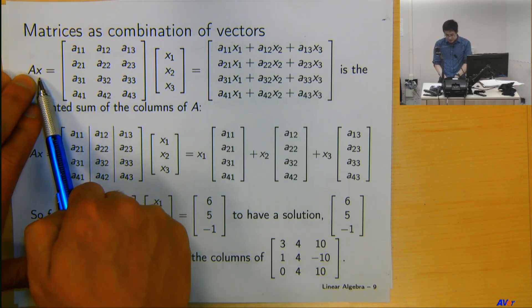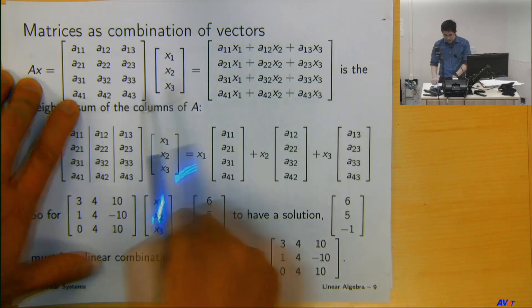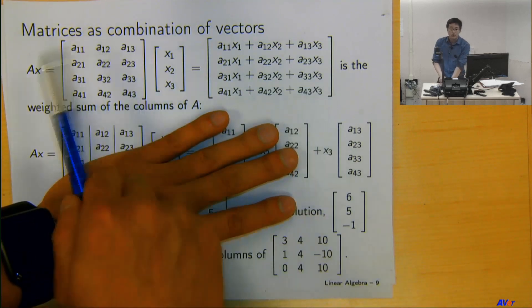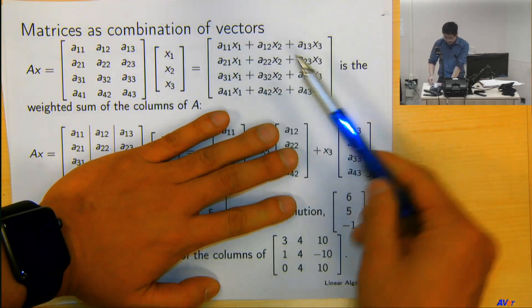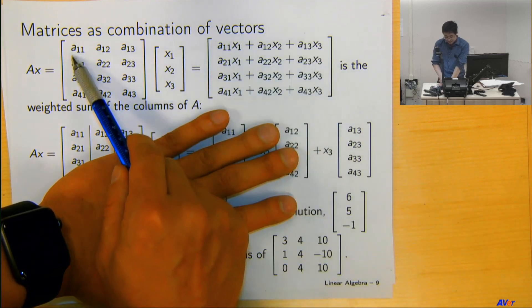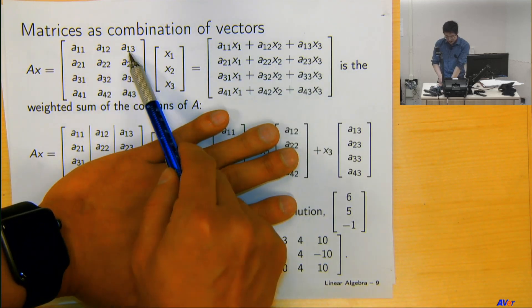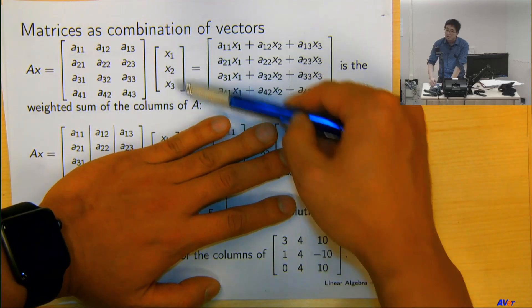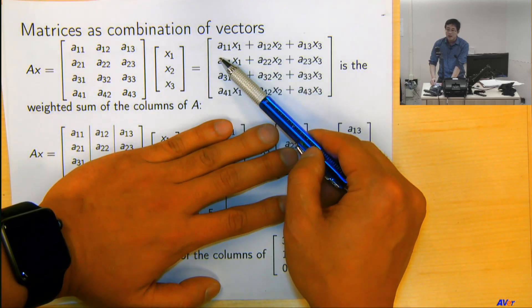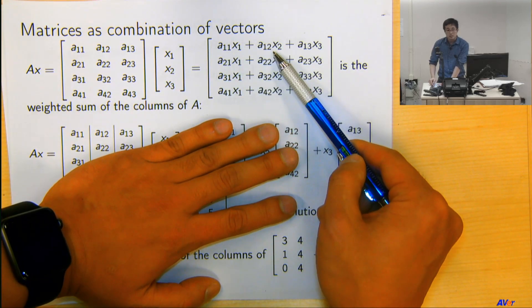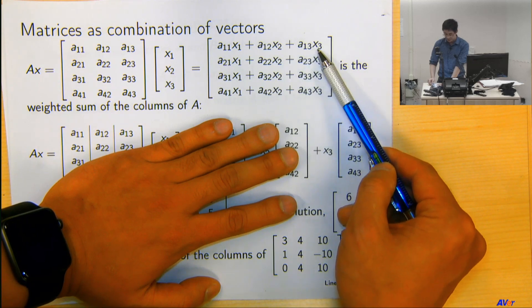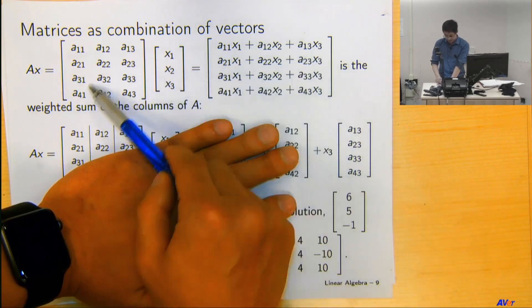If you think about a matrix times a vector, of course you can, according to our rules, calculate all the individual entries. The first element is going to be the first row multiplying the first column. So it's going to be A11x1, A12x2, and A13x3. You can do this for all the elements here.